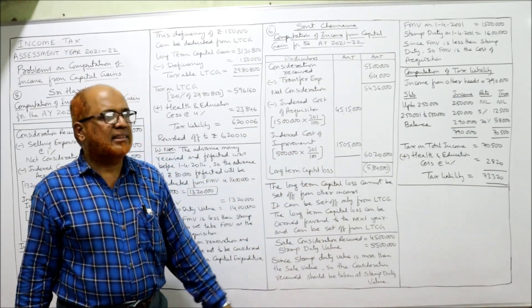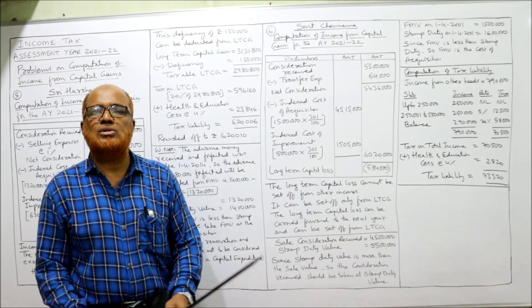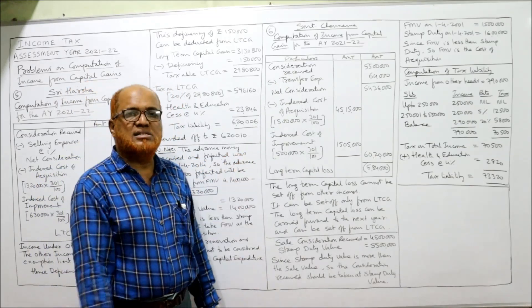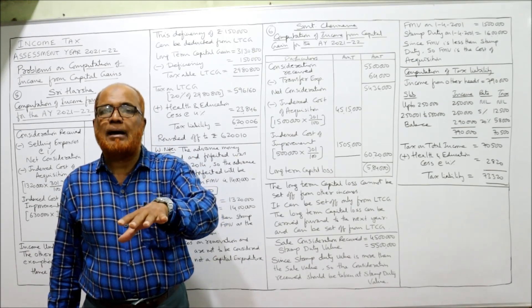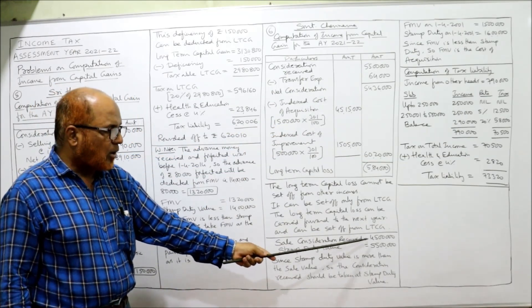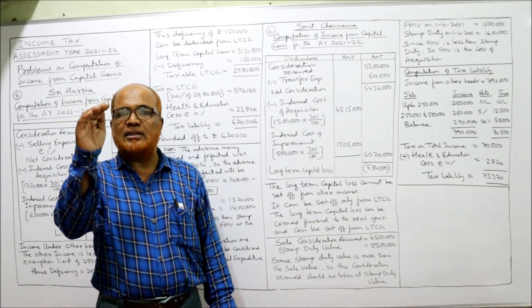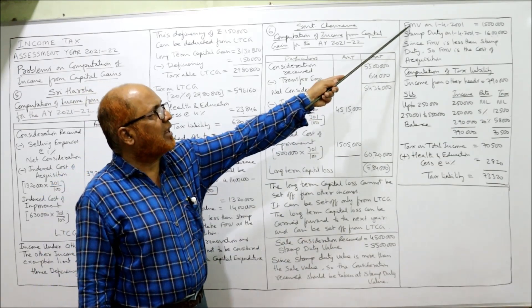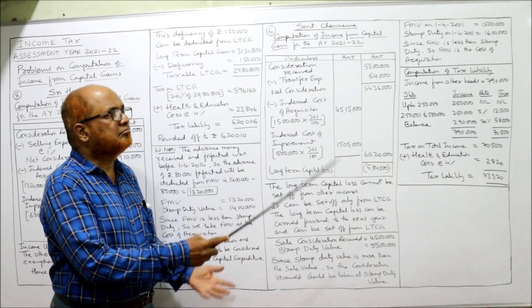To summarize problem six: for consideration received, we take the higher of actual sale value or stamp duty value — whichever is higher. Here Rs. 45 lakh or Rs. 55 lakh — we take Rs. 55 lakh. For cost of acquisition, we take the lower of fair market value or stamp duty value — whichever is lower. Here FMV of Rs. 15 lakh is lower, so Rs. 15 lakh is the cost of acquisition.